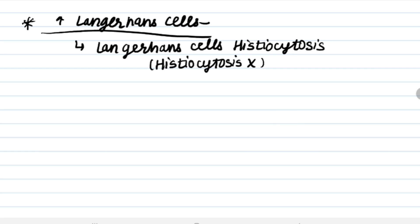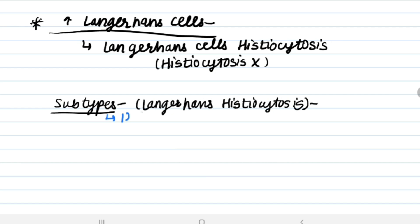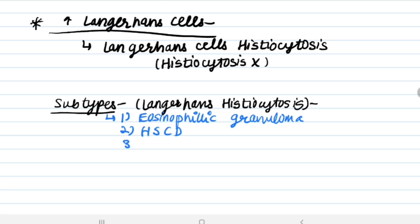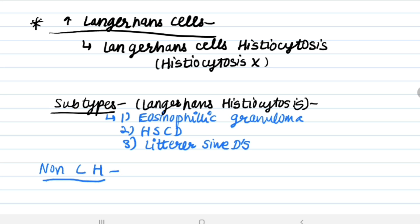Subtypes of Langerhans cell histiocytosis include: eosinophilic granuloma, Hand-Schüller-Christian disease, and Letterer-Siwe disease. The subtype of non-Langerhans cell histiocytosis is xanthoma disseminatum.